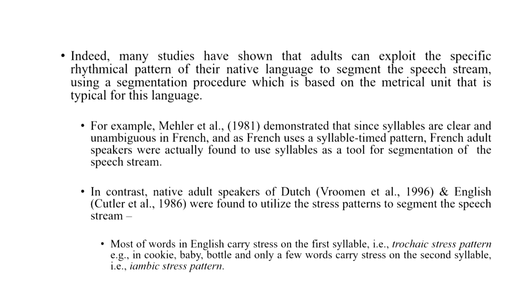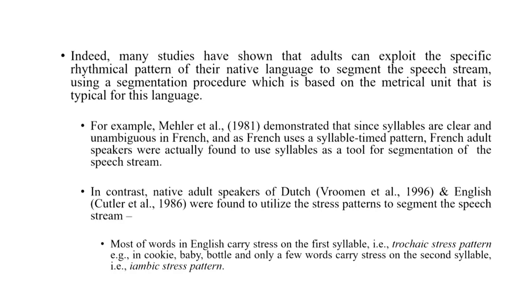Most words in English carry stress on the first syllable — for example, 'baby', 'bottle', and many other words. These words are referred to as having a trochaic stress pattern. Similarly, only a few words have what is called the iambic stress pattern, basically having stress on the second syllable, which are words like 'guitar', 'debate', and so on. So the idea is that infants and adults can use words having stress patterns on the first syllable as a cue to determining word boundaries. This can be a very good clue in addition to the statistical regularities of speech for infants and adults to segment the continuous stream of speech into words.